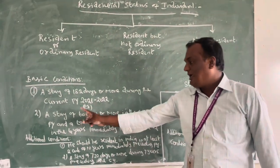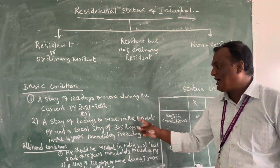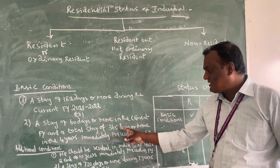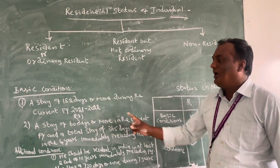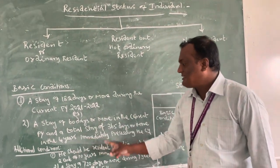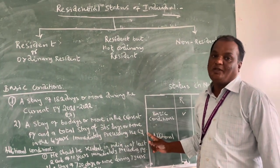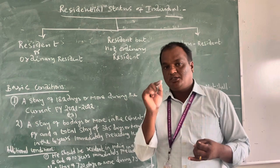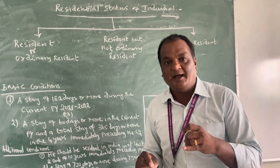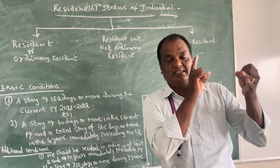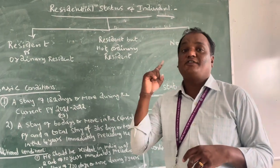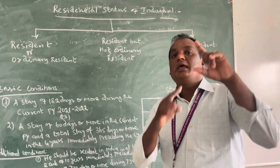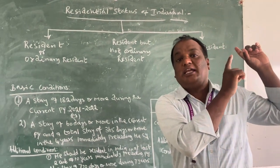The second Basic Condition is a stay of 60 days or more in the current previous year, and a total stay of 365 days or more in the 4 years immediately preceding the current year. So the person should stay in India for 60 days during the previous year and 365 days or more during the preceding 4 years.